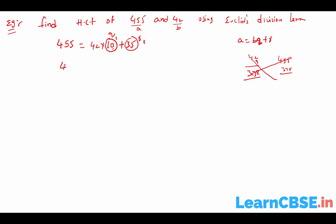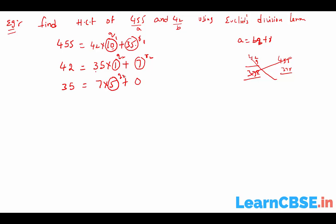Now take A equal 42 and B equal 35. Then 42 equals 35 times 1 plus 7, so Q2 equals 1 and R2 equals 7. Next, take A equal 35 and B equal 7. Then 35 equals 7 times 5 plus 0, so Q3 equals 5 and R3 equals 0.